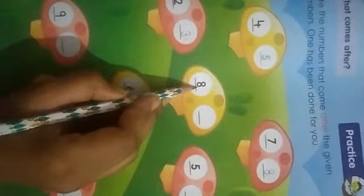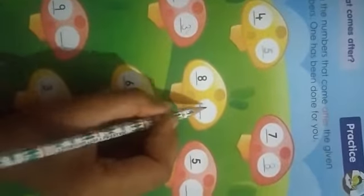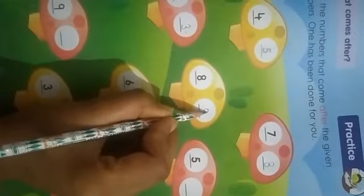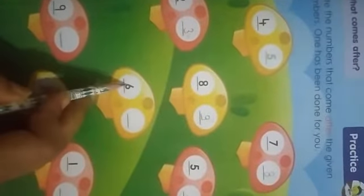Number 5. What comes after 5? 5, 6, number 6. Same, number 6. What comes after number 6? 6, 7. What comes after number 6? Number 7.